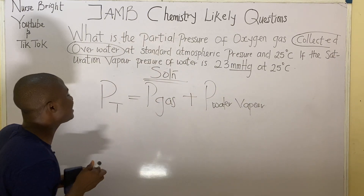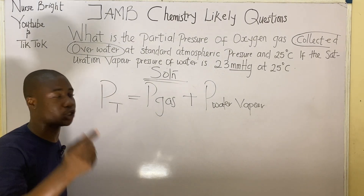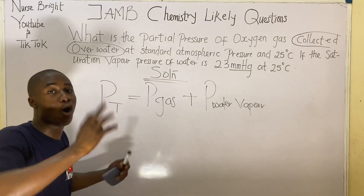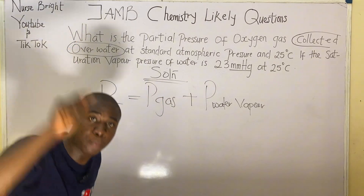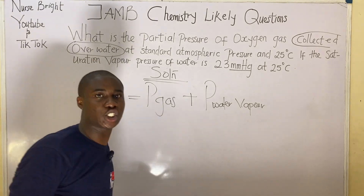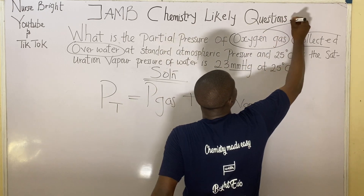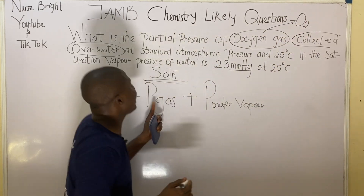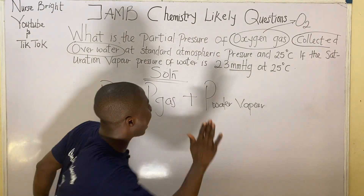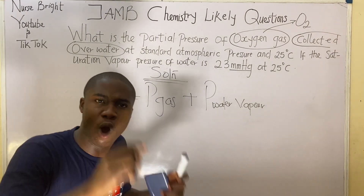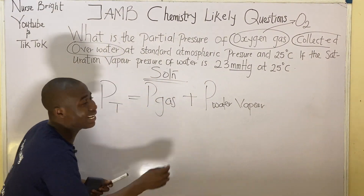In this formula, PT means total pressure of the gas mixture. P_gas is the pressure of the specific gas in the question — which here is oxygen gas (O₂). And P_water_vapor is the pressure of the water vapor in the question.